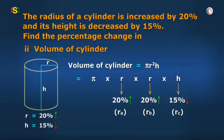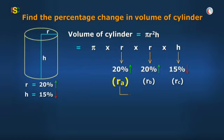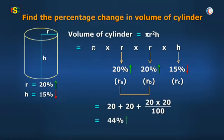Therefore, for calculating percentage change in volume, first, we have to club R A and R B, which can be written as 20 plus 20 plus 20 into 20 by 100 equal to 44%, which we can call R D.